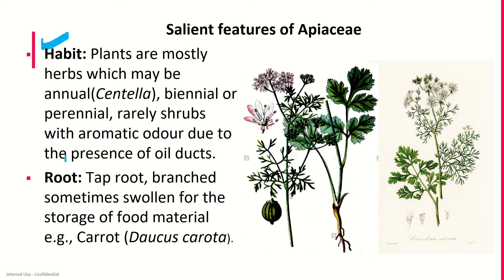Inflorescence is often a simple or compound umbel surrounded by thin leafy bracts called involucre. In some, the inflorescence is reduced to a single flower — for example, in some species of Centella and Azorella — and to a compact head in Eryngium.